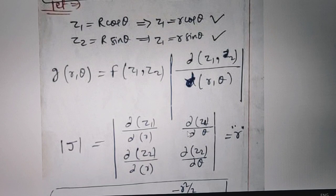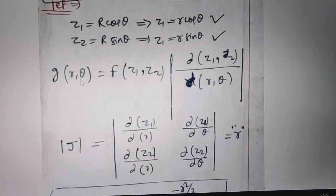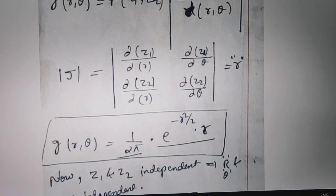Actually, here we implement the Jacobian method to find out the distribution function f1 and f2 with respect to r and theta. So according to the Jacobian method, if we have a function z of two variables r and theta, then f of z1 and z2 is written as the differentiation of z1 and z2 with respect to r and theta. Applying the Jacobian technique, we write the matrix of partial derivatives: differentiation of z1 with respect to r, differentiation of z1 with respect to theta, differentiation of z2 with respect to r, and differentiation of z2 with respect to theta, which simply equals r.